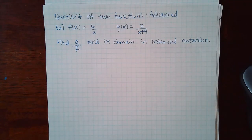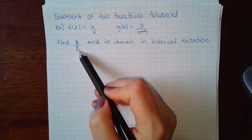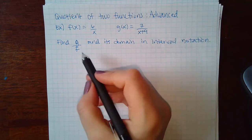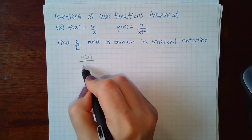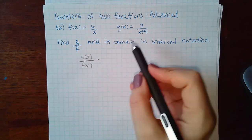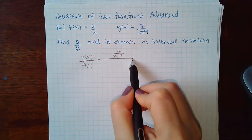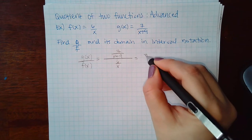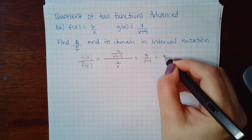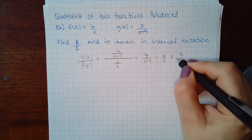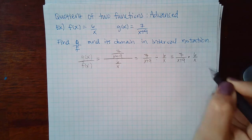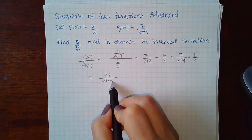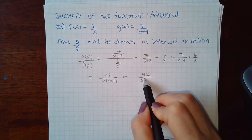Now for the quotient of two functions — advanced. We want g over f and its domain in interval notation. g(x) over f(x) is a fraction over a fraction: (7/(x+9)) divided by (6/x). Dividing by a fraction is the same as multiplying by the reciprocal, giving 7x over 6(x+9), or 42 over x²+9x.